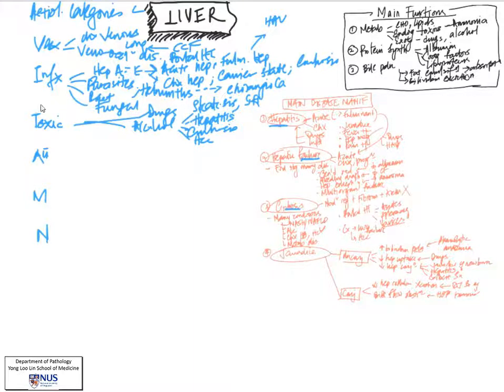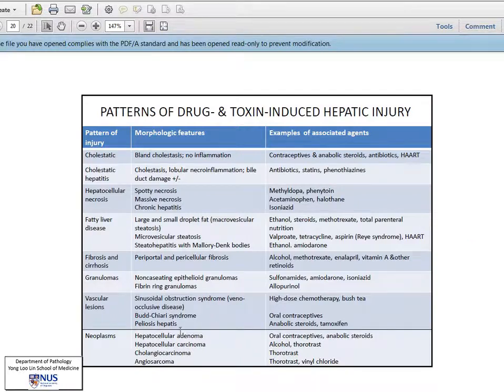Still on the topic of toxic causes of liver disease, thorotrast administration for imaging of the liver can be associated with liver tumors. As you can see in the slide from your lecture notes, thorotrast can be associated with cholangiocarcinoma or even angiosarcoma.